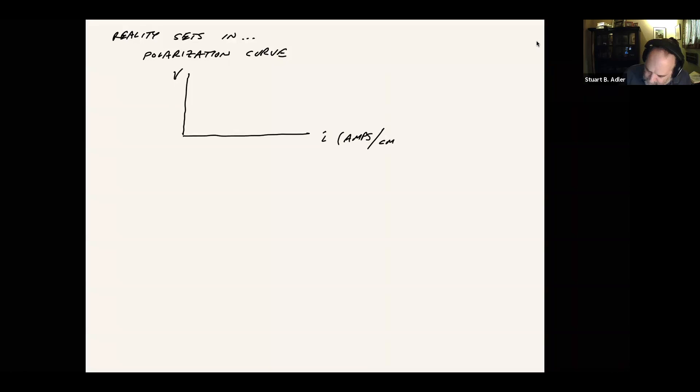Usually people will measure different size cells, but you would have to specify the cell size in order for that to be meaningful. So a lot of times authors will take the current, divide it by the area of the cell, and that gives us what's called the current density, usually symbolized with a lowercase i instead of a capital I.